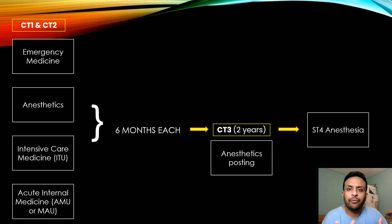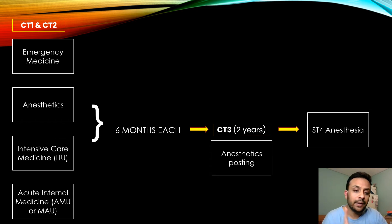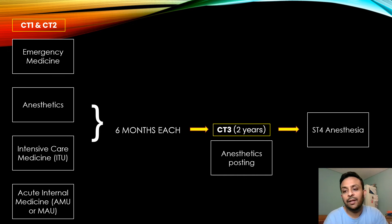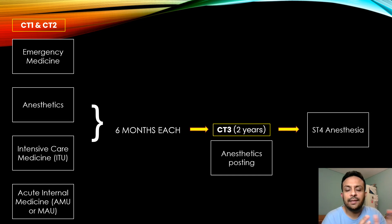For the training structure of ACCS anesthetics, you rotate across four departments for six months each: emergency medicine, anesthetics, intensive care, and acute internal medicine. You complete CT1 and CT2, and then CT3 involves two years exclusively in anesthetics. After completing four years of core training, you can apply for ST4 anesthesia. In summary, ACCS anesthetics is four years of core training, after which you progress into higher specialty training.